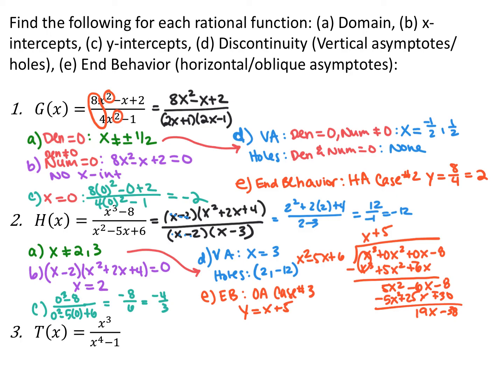For end behavior of the second function, this is a case 3 problem. The numerator is one degree more than the denominator, so I do long division to find the oblique asymptote. I set up long division and got a quotient of x plus 5. The remainder is ignored. So my end behavior is: as x approaches positive or negative infinity, y approaches x plus 5.